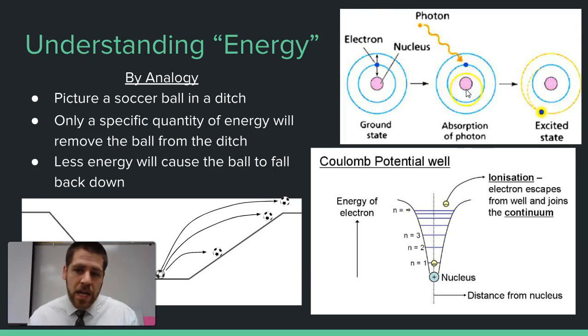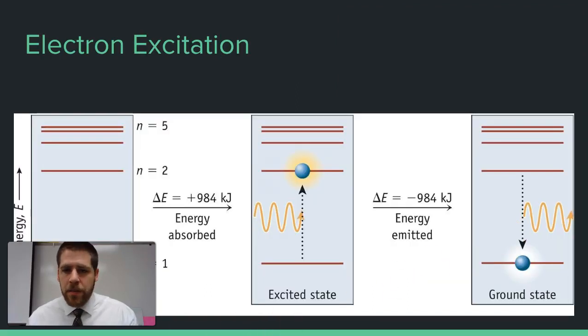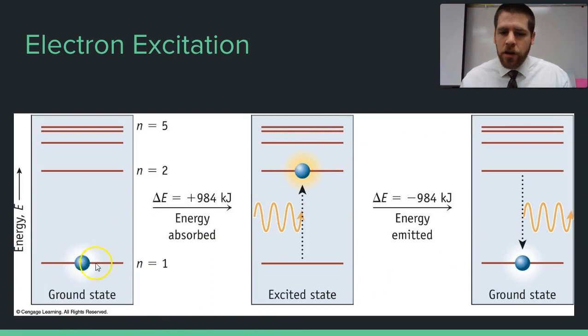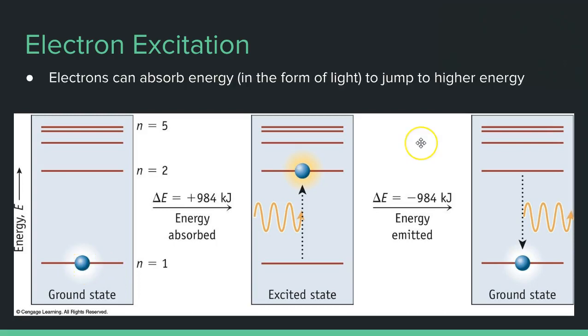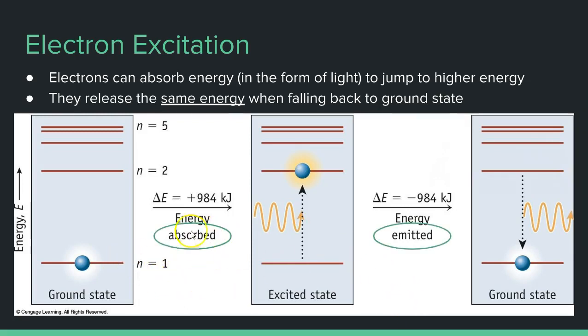We call this the ground state and this the excited state. Here's another example that shows this. Here's our ground state - the lowest possible it could be. We're thinking of hydrogen in this case. Electrons can jump up by absorbing energy in the form of light, and they release that same amount of energy when they come back to the ground state. Energy absorbed makes it go up in energy. Energy emitted or released makes it go down in energy. That same amount of energy is absorbed and then released, because it's a very specific quantity. These energy levels are very specific quantities.